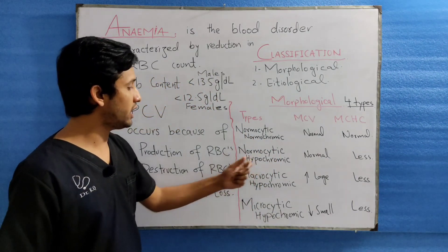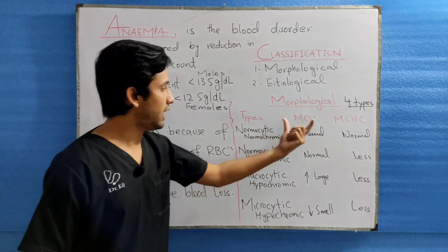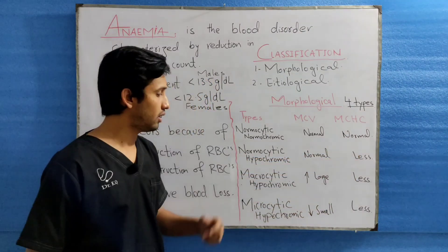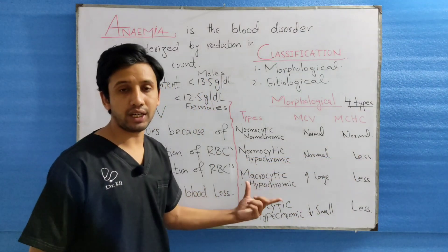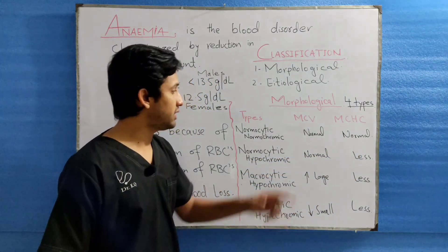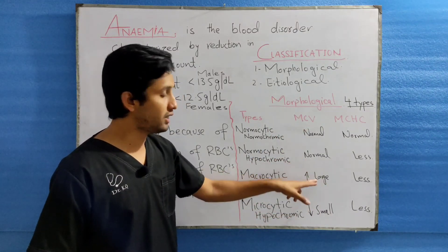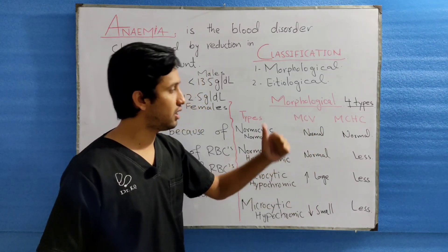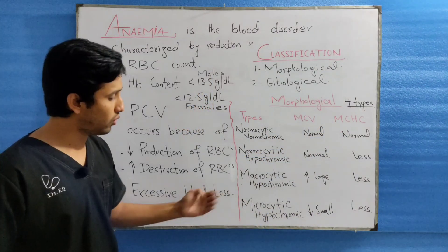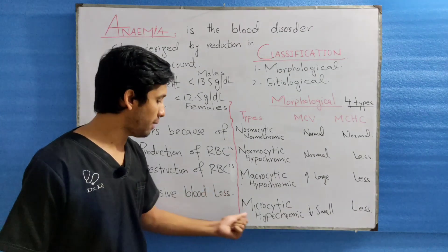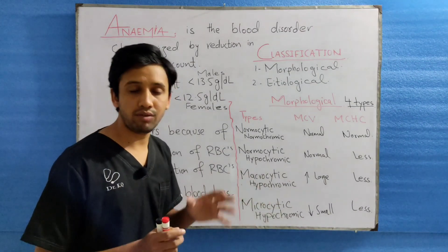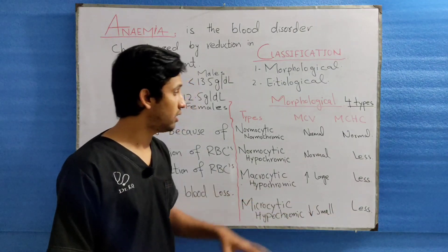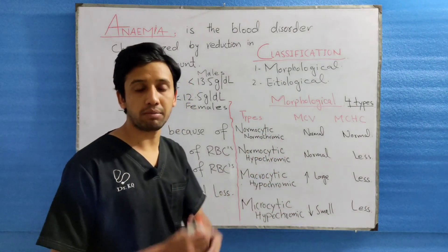The second type is normocytic hypochromic anemia, in which the MCV value is normal but the MCHC value is less. The third type is macrocytic hypochromic anemia, in which the MCV value is raised — indicating large size RBCs — as well as a decreased MCHC value. The fourth and last type is microcytic hypochromic anemia, in which both the MCV value and MCHC are lower. These are the four morphological types of anemia.